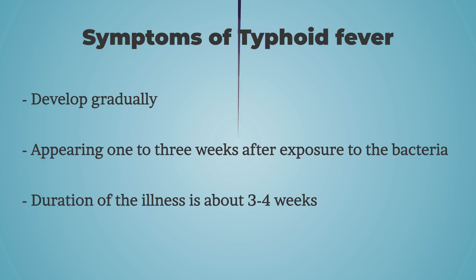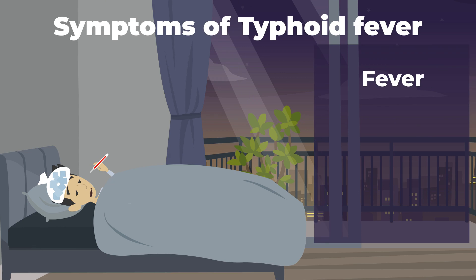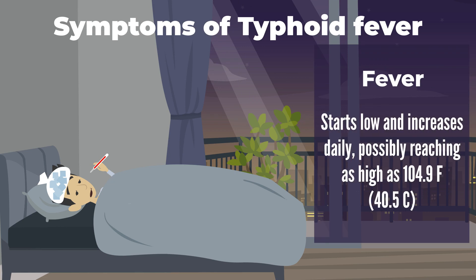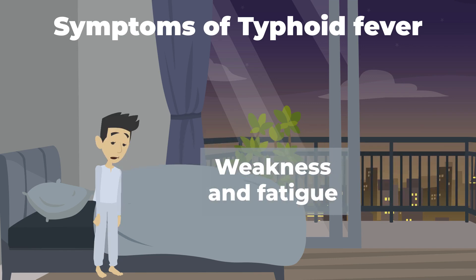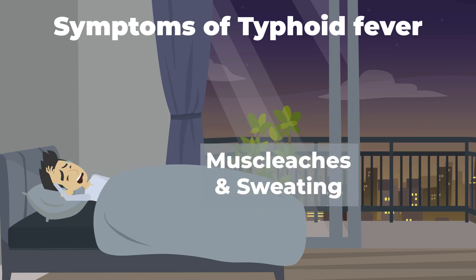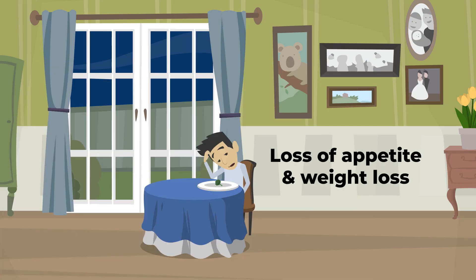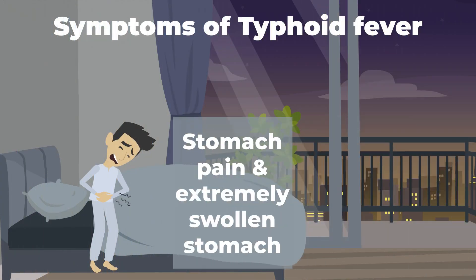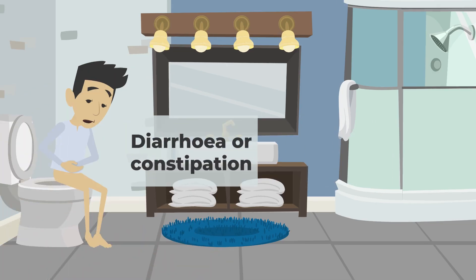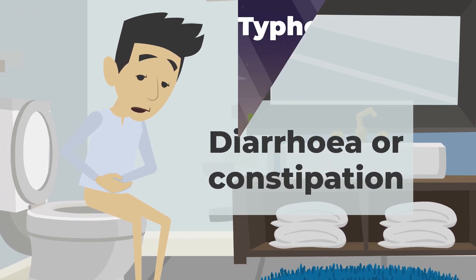Signs and symptoms of early illness include fever that starts low and increases daily, possibly reaching as high as 104.9 degrees Fahrenheit. Then the patient may suffer from headache, weakness, and fatigue. There is muscle aches, sweating, and dry cough. Patient suffers from loss of appetite and weight loss. Patient suffers from stomach pain and the stomach is extremely swollen. There can be diarrhea or constipation and skin rashes.